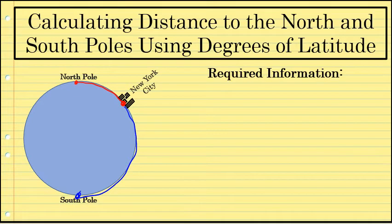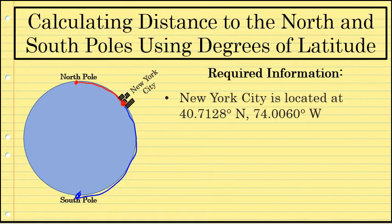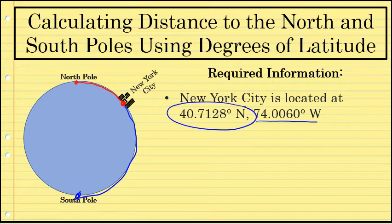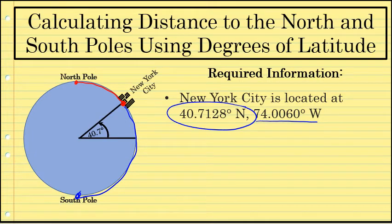To do this, there are a few things that I need to know. First, the location of New York City is about 40.7 degrees north, 74 degrees west. Now, the longitude of New York City isn't relevant in this problem. What's important is that the latitude is approximately 40.7 degrees north. And what this means is from the center of the Earth, the angle between the equator and New York City is 40.7 degrees.